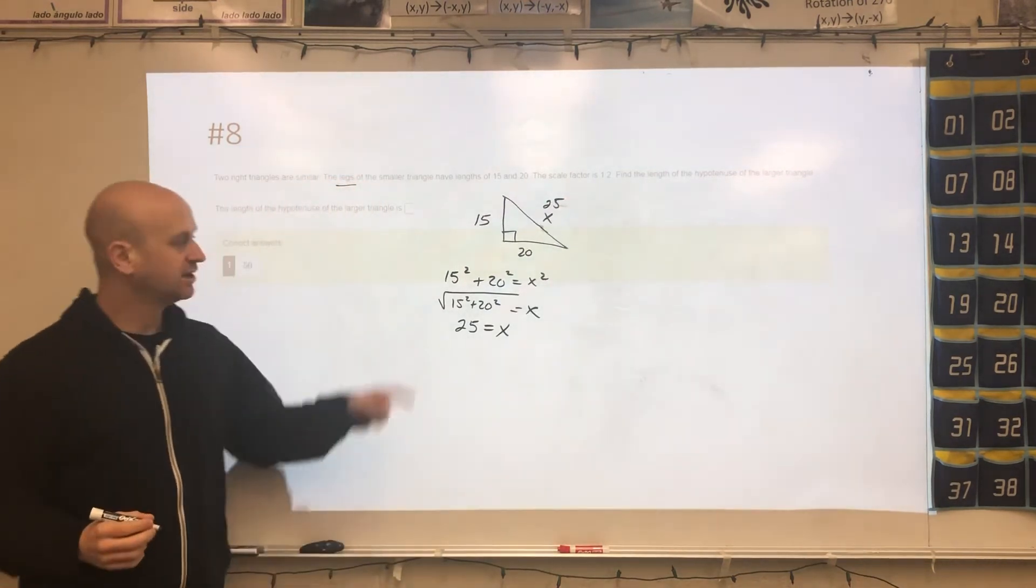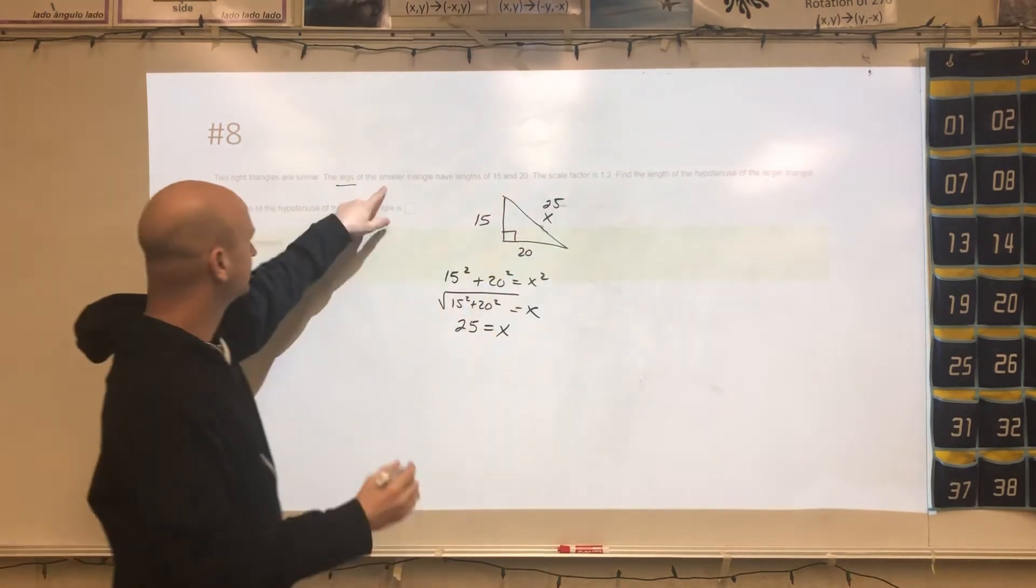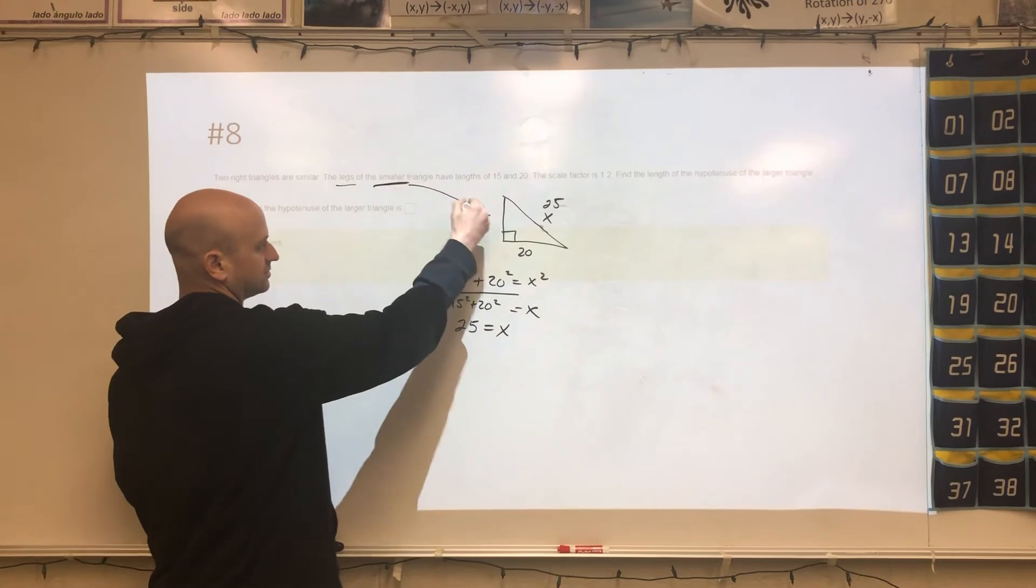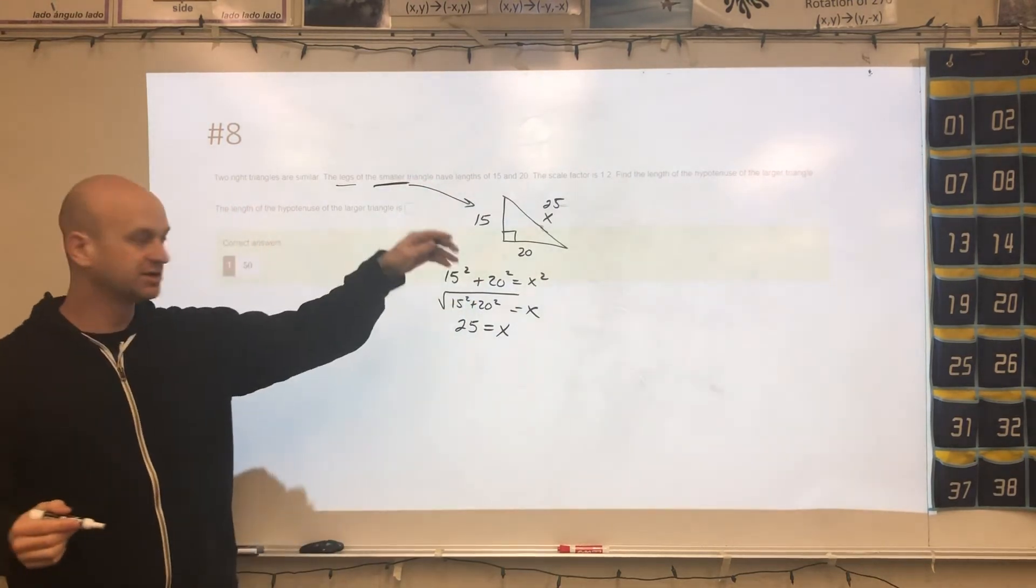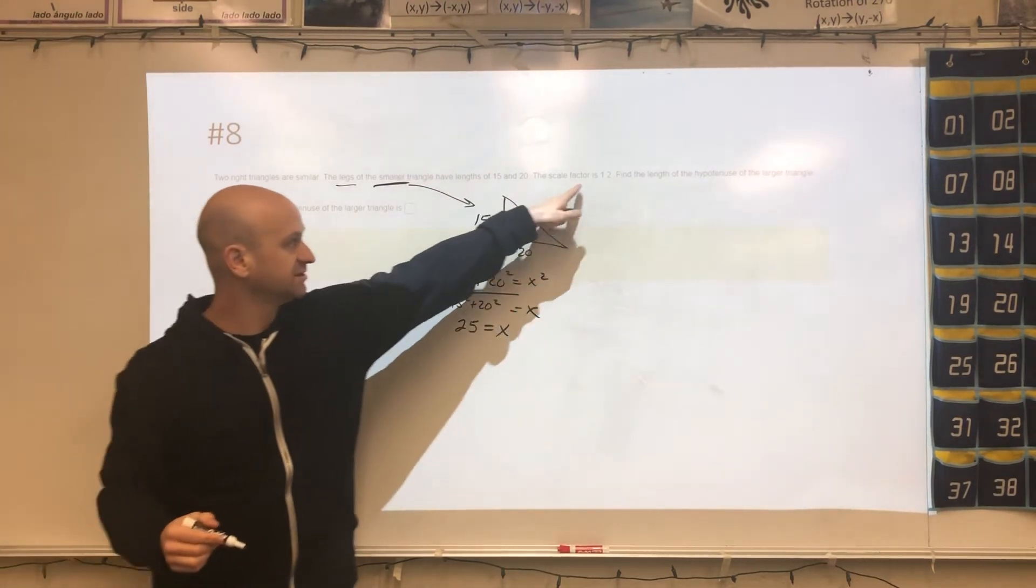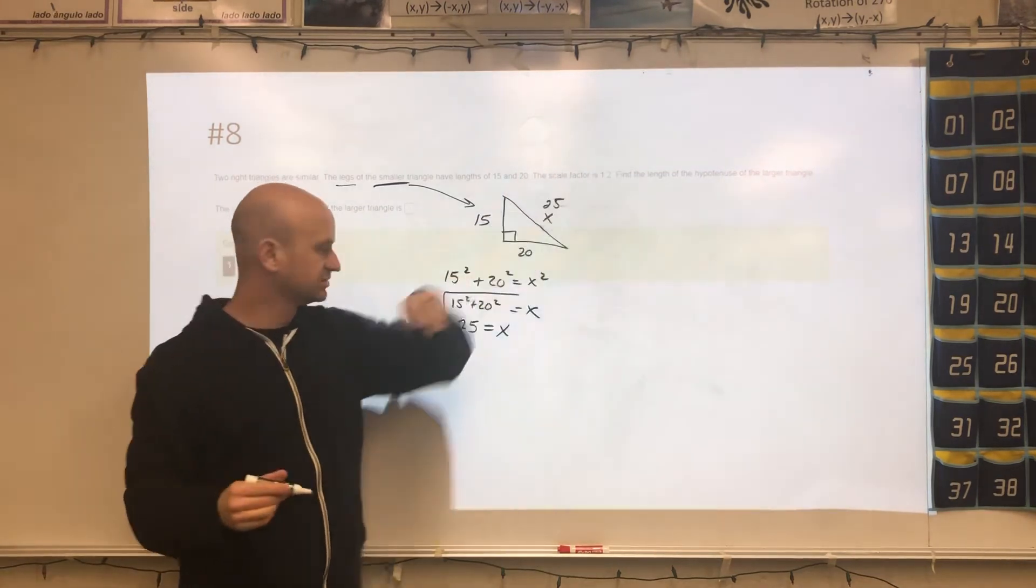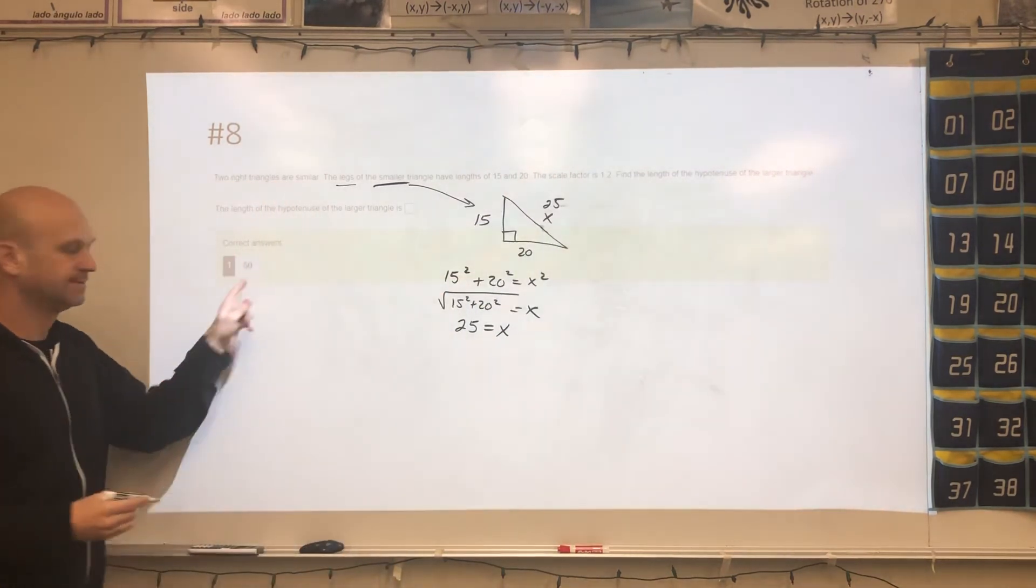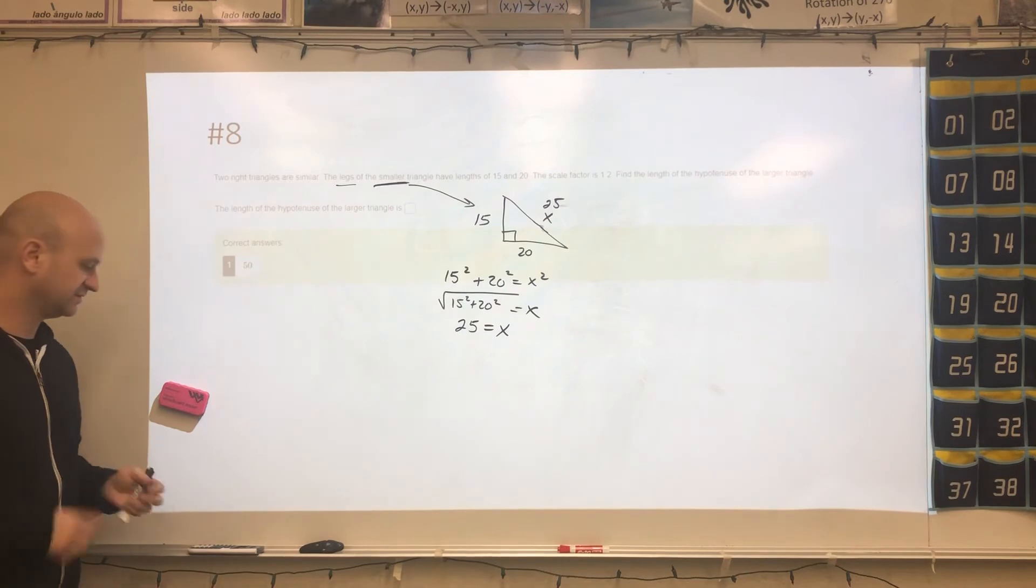Now because the scale factor, by the way, this is the smaller triangle, correct? So the larger triangle is going to be twice as long as this, because the scale factor is one to two. So you would take 25 times two, and that's how you would end up with 50.